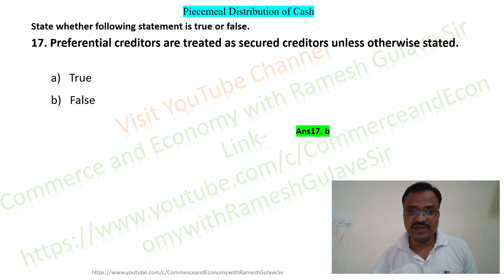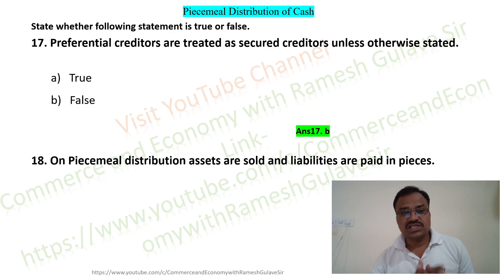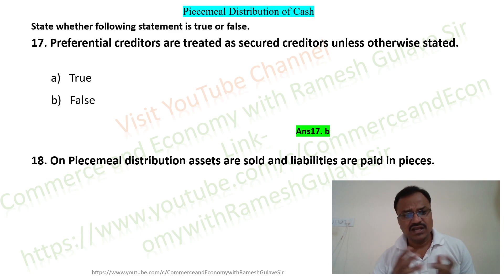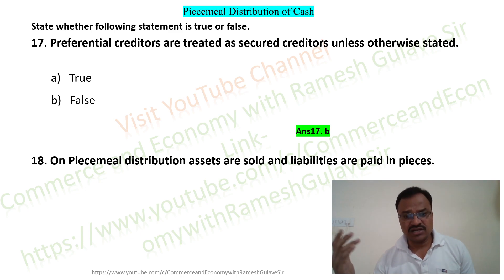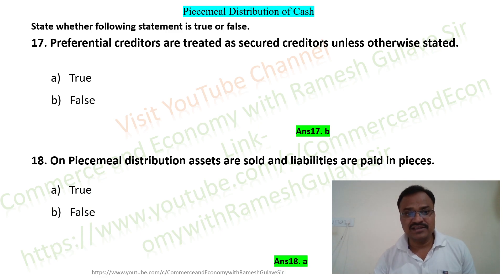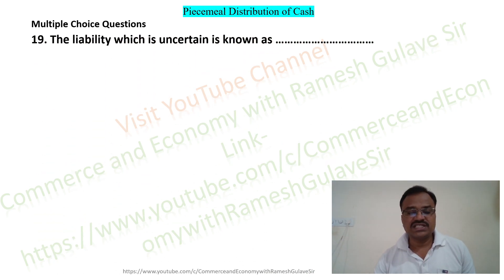Question 18: In piecemeal distribution, assets are sold and liabilities are paid in pieces — true or false? In piecemeal distribution, assets are sold and liabilities are paid in pieces or parts, so this statement is true. Option A is the right answer.